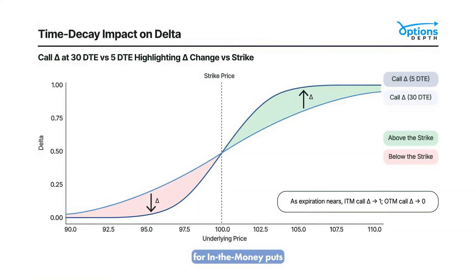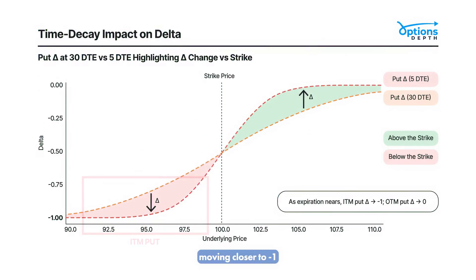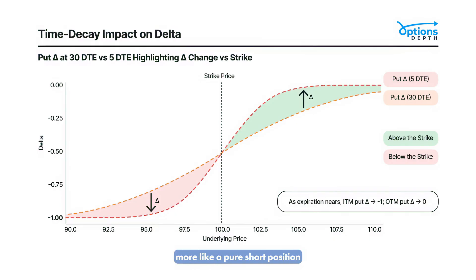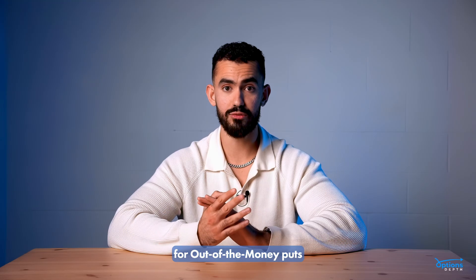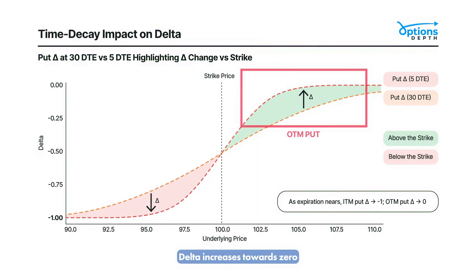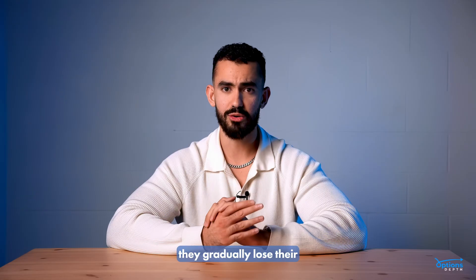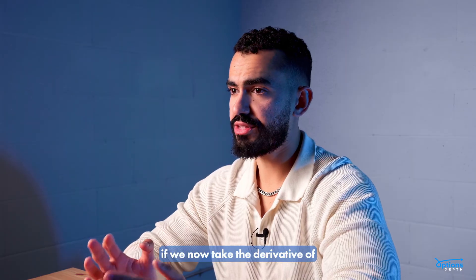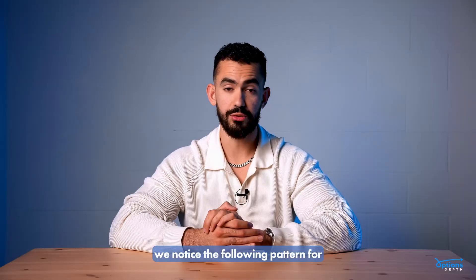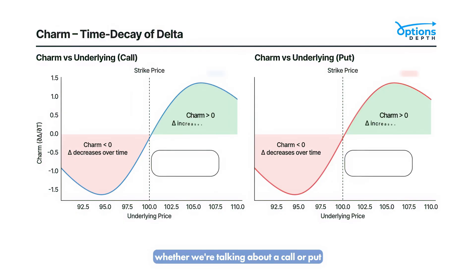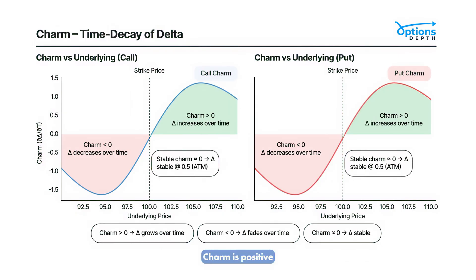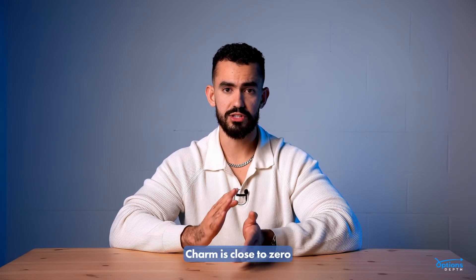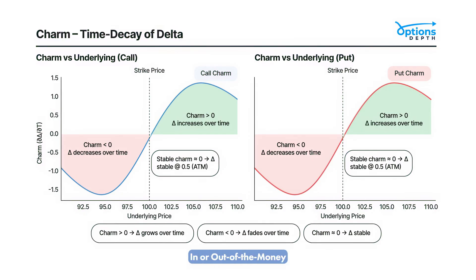The same pattern applies for puts. For in-the-money puts, Delta decreases moving closer to negative 1 — as expiration nears, they behave more like a pure short position. For out-of-the-money puts, Delta increases towards zero, reflecting a lower probability of expiring in the money and gradually losing sensitivity to the underlying. Taking the derivative of Delta with respect to time gives us Charm. Above the strike, Charm is positive, meaning Delta increases over time. Below the strike, Charm is negative, meaning Delta exposure decreases. At-the-money options have Charm close to zero, since there's a ~50% chance of expiring either way, keeping Delta stable at around 0.5.